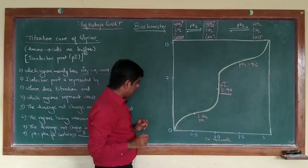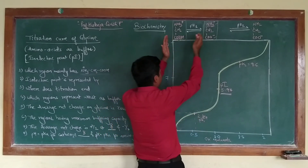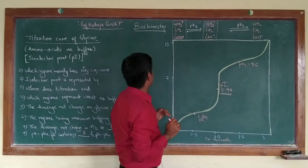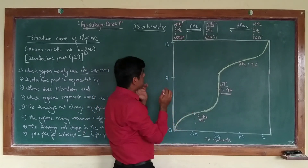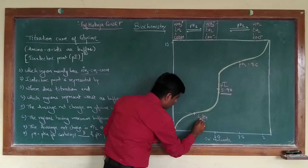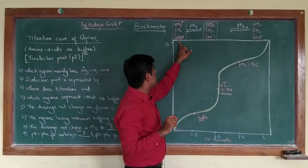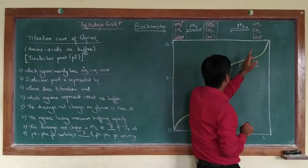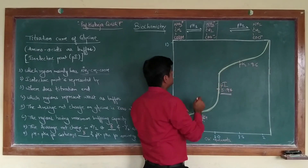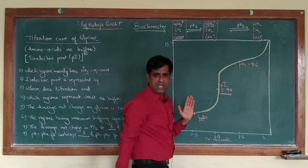At the pH of 2.34, the amino acid exists in two forms in equal proportion. For example, if you have 1000 molecules of amino acid, 500 occur exclusively in the protonated form and 500 occur in the zwitterionic form. That is the pK1 for the ionization of the first carboxyl group. For the amino group, the second pKa corresponds to the point where 50 percent of the amino acid is in the zwitterionic form and 50 percent is in the fully deprotonated form.